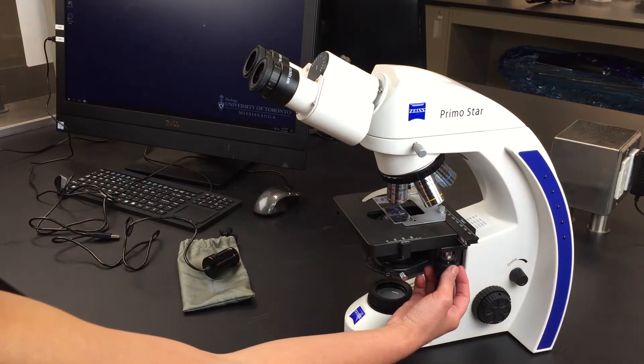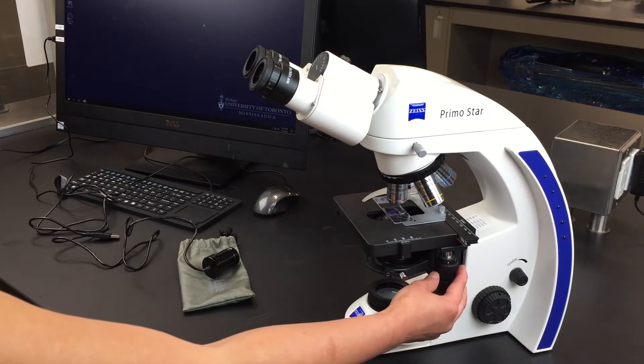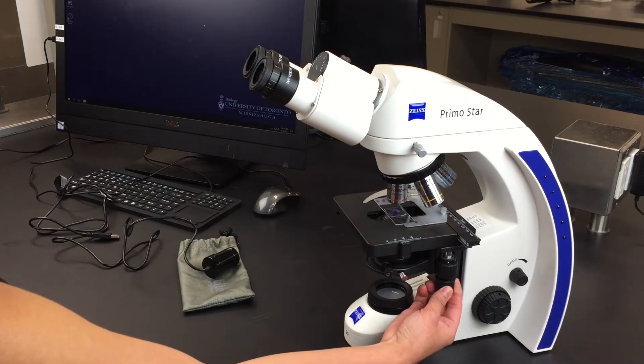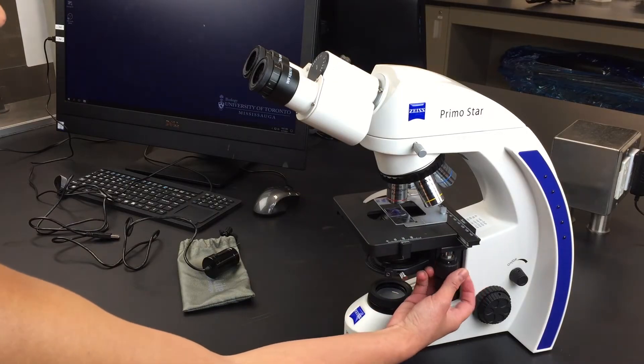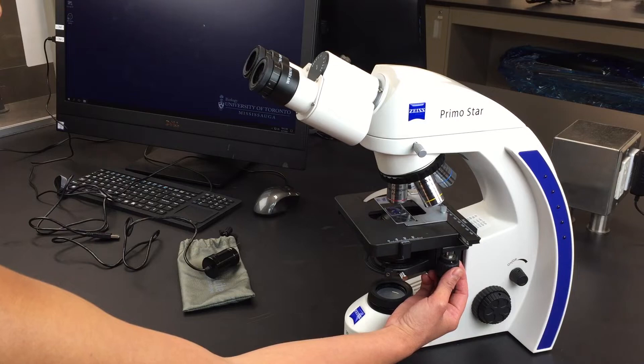This adjustment knob has two knobs. One ring moves the microscope slide left and right, and one moves it up and down. Position your slide to be under the proper view of interest.